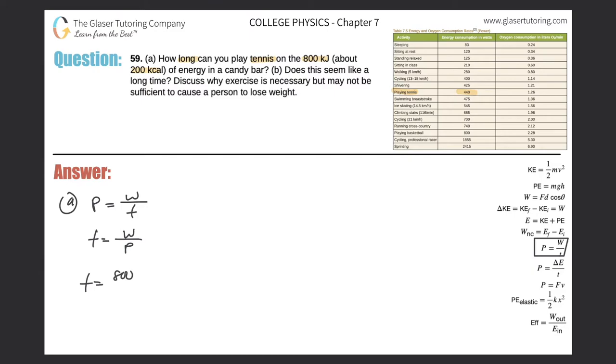That should be fairly straightforward to bring it into joules and then divide it by the power. They said that tennis requires a power of about 440 watts, so the time now is going to be 800 times 1000 and divide it by 440.